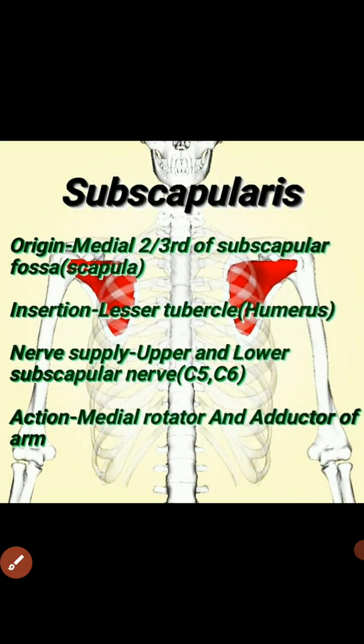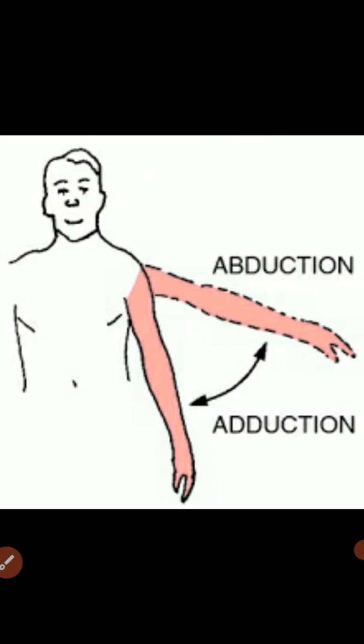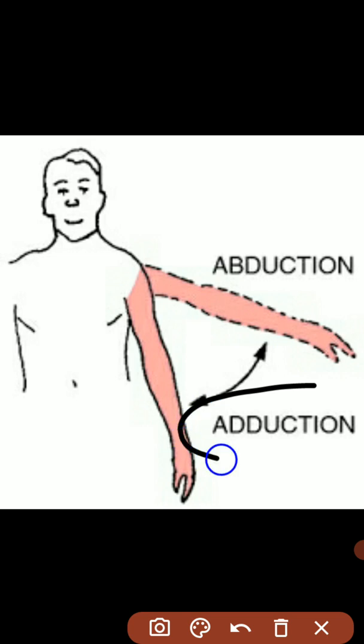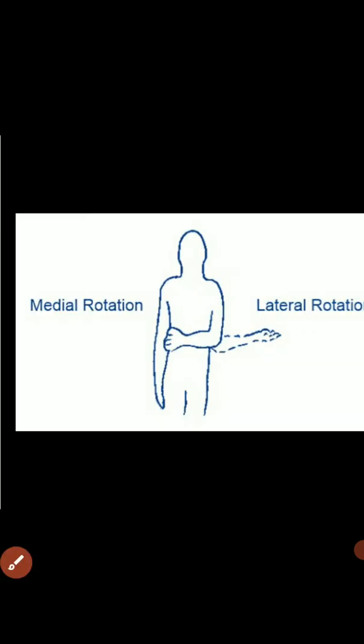Next muscle is subscapularis muscle. As you can see in the image, origin is from medial two-thirds of the subscapular fossa of scapula. Insertion: lesser tubercle of humerus. Nerve supply: upper and lower subscapular nerve C5-C6. Action: medial rotator and adductor of arm.